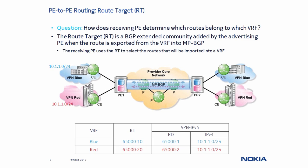PE2 receives multiple VPN IPv4 routes from PE1 and then needs to determine which routes belong to which VRF. To resolve this issue, the advertising PE adds a new identifier called Route Target to each MPBGP update. The route target identifies to the receiving PE the VRF that a VPN IPv4 route is associated with. In our example, PE1 adds route target 65000:10 to the MPBGP updates for the blue VRF routes, and route target 65000:20 to the MPBGP updates for the red VRF routes. When PE2 receives these MPBGP updates, it imports routes received with Route Target 65000:10 into the blue VRF and routes received with Route Target 65000:20 into the red VRF.